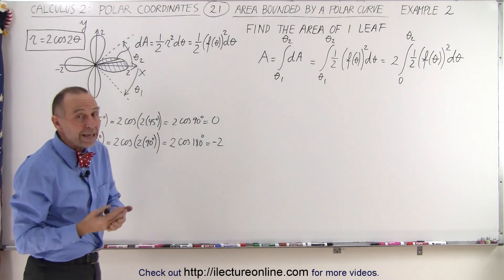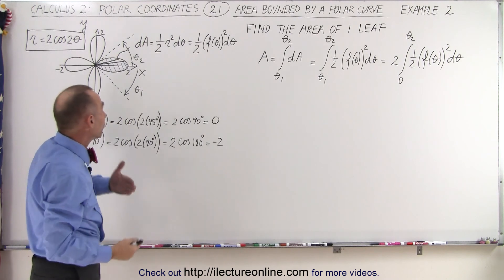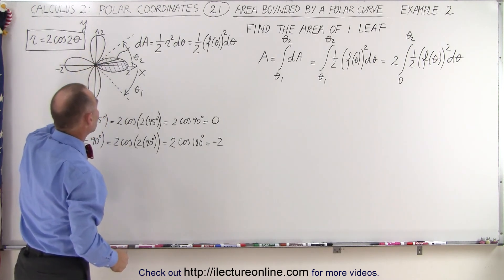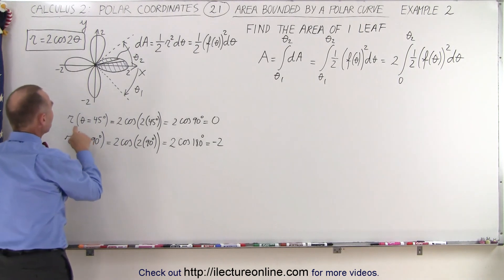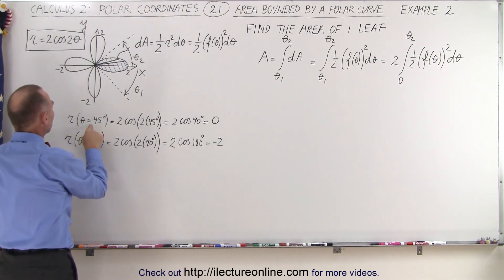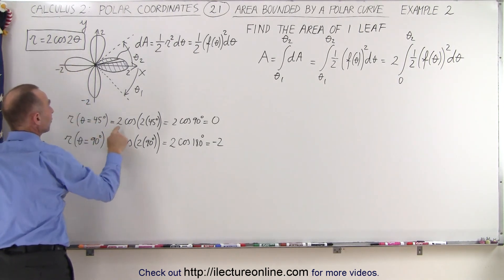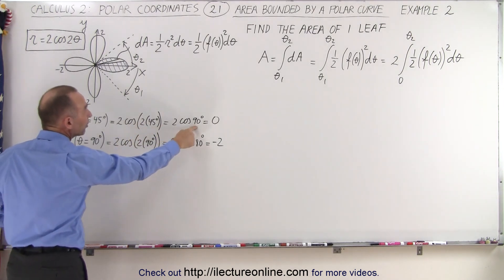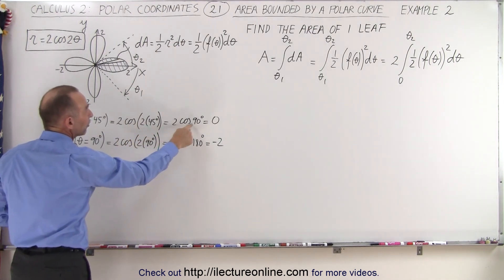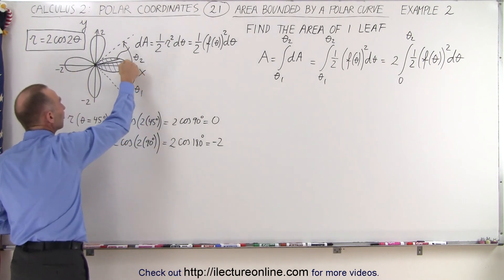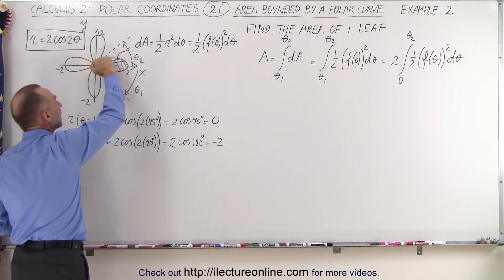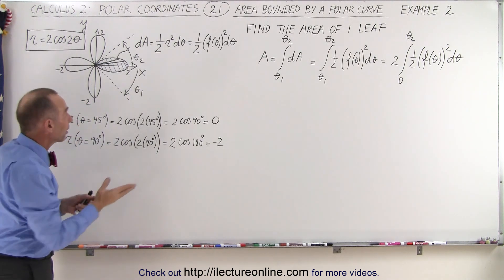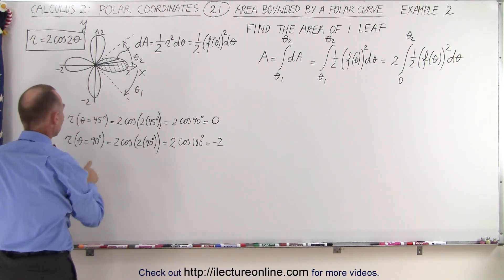The hard part may be finding what that angle is — what is that integration angle theta sub 2? Now when you evaluate the function at 45 degrees, the function is twice the cosine of 2 times 45 degrees, which is 90 degrees, and the cosine of 90 is 0. So we can see that the function goes to 0 at an angle of 45 degrees, which bounds that leaf by the angle of 45 degrees.